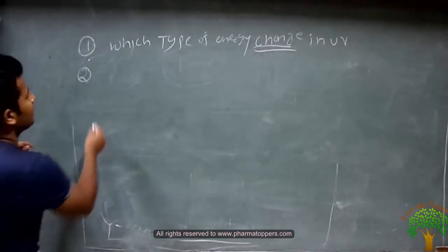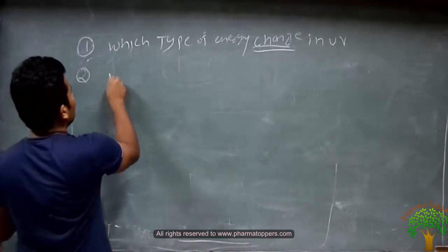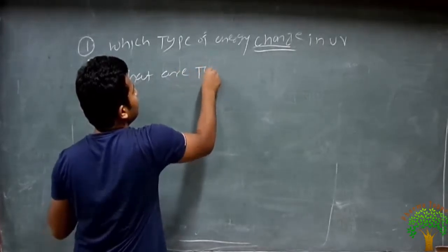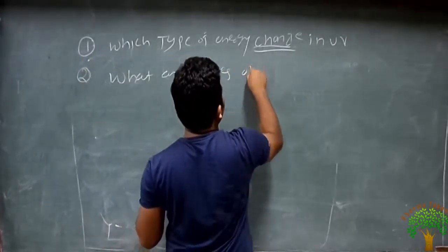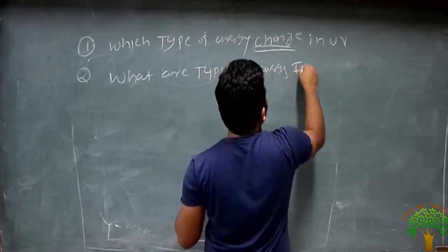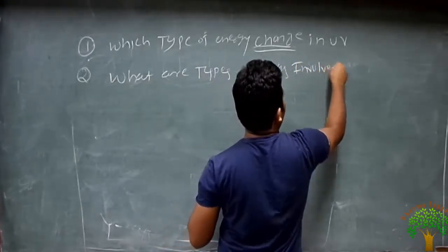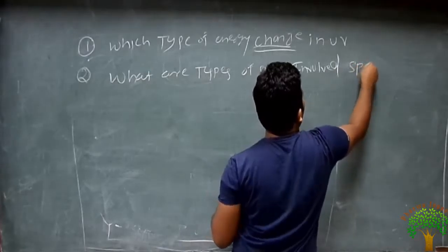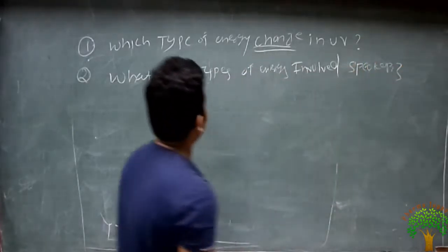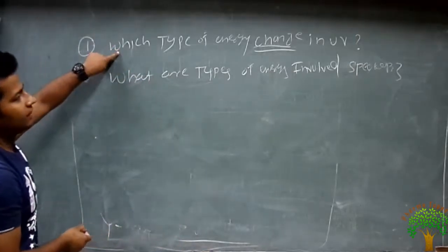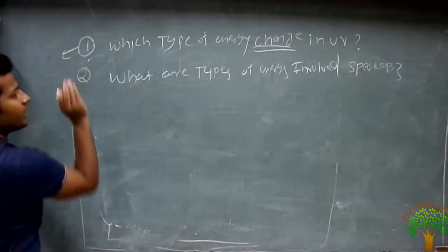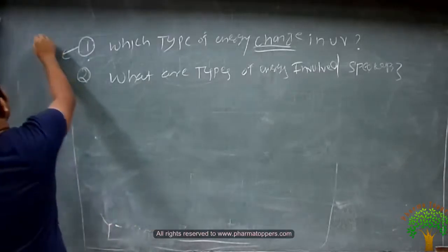In the second portion, what are the types of genealogy involved in UV spectroscopy? The answer for this is already known. In UV spectroscopy, there is only a change in the electronic energy.